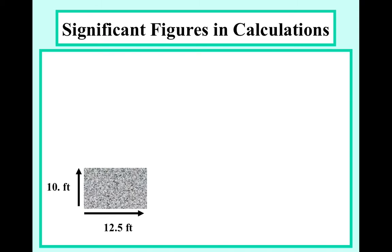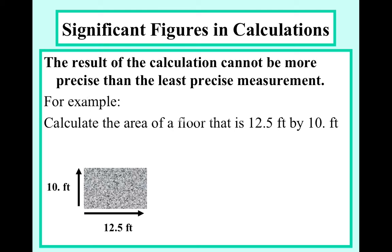Here we go. So here's a piece of flooring, if you have ever laid carpet or tile down before. This is a pretty big piece. This is 10 foot by 12.5. How do we figure out the area? We multiply. Now, notice that there's two different sets of numbers. There is a number that has two significant figures, and then there's a number that has three significant figures.